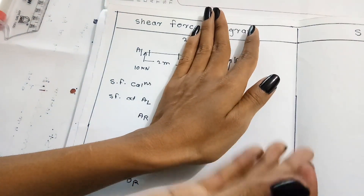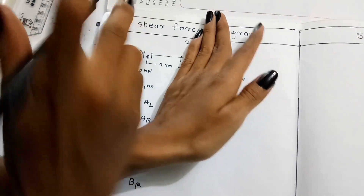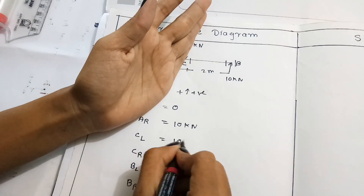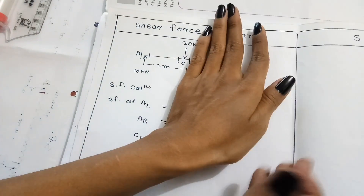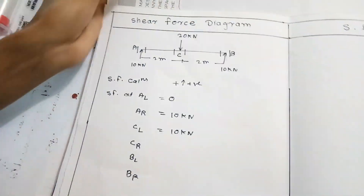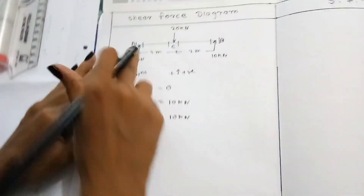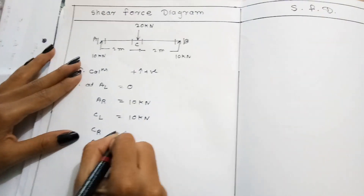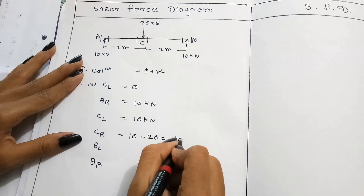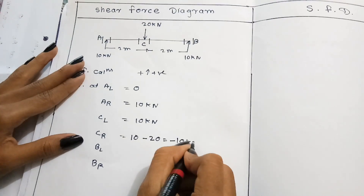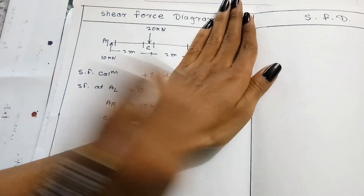At C-left, on the left side there is only one force going upward, so C-left equals 10 kN. At C-right, there is one force going upward and one force going downward: 10 kN upward minus 20 kN downward equals minus 10 kN. So C-right equals minus 10 kN.